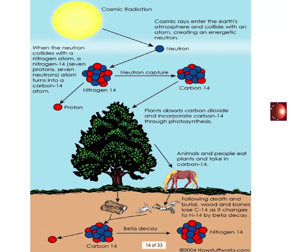While organisms are living, any carbon-14 that decays is replaced by absorbing more carbon dioxide from the atmosphere. But when the organism dies, carbon-14 continues to decay — forming nitrogen — but there's no replacement. So you can date an artifact by comparing the ratio of carbon-12 to carbon-14. Carbon-12 is not radioactive so its amount stays steady, while carbon-14 levels drop — by comparing those levels you can figure out how long the organism has been dead.